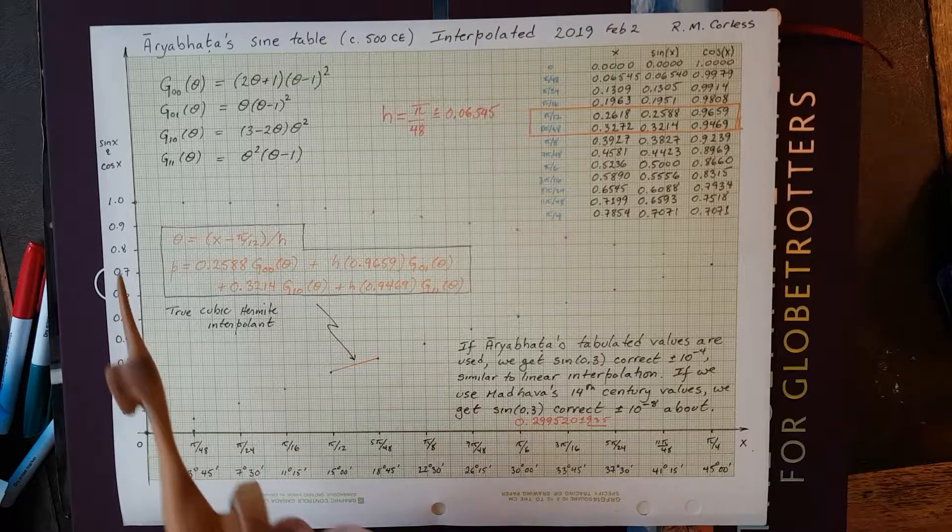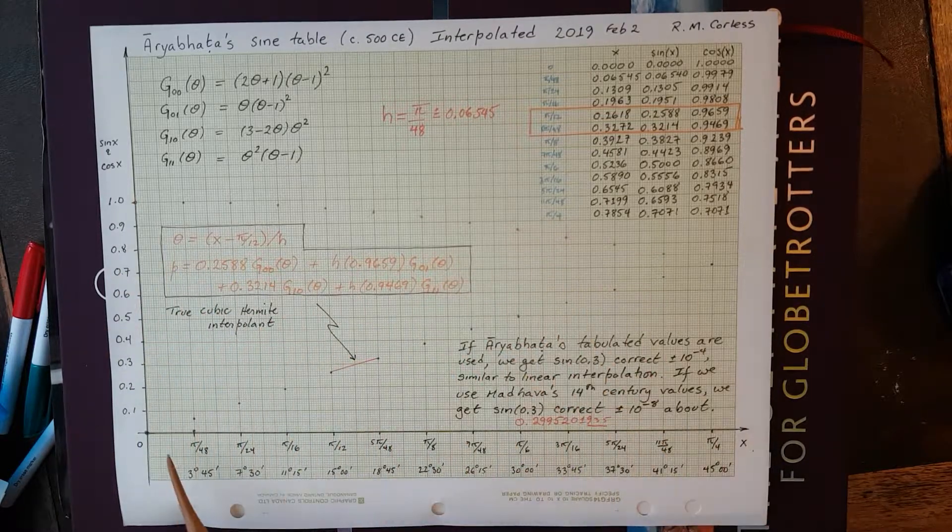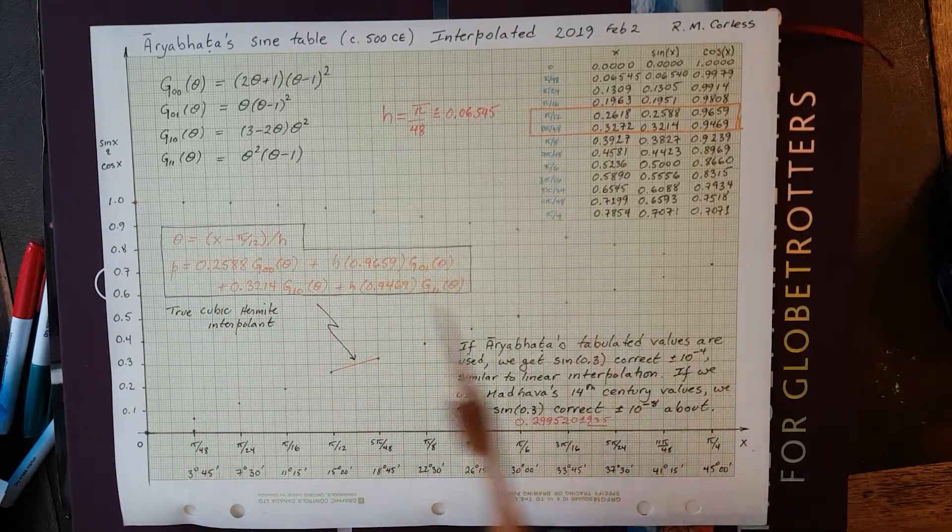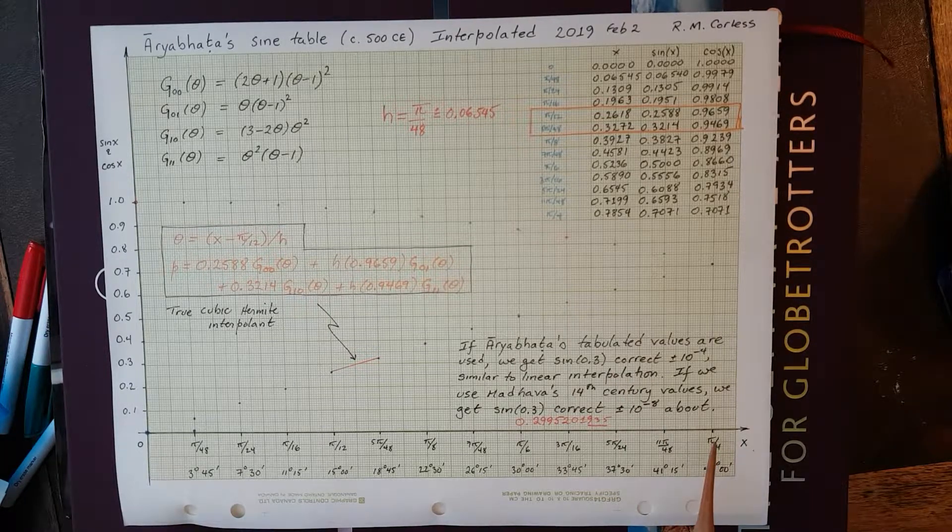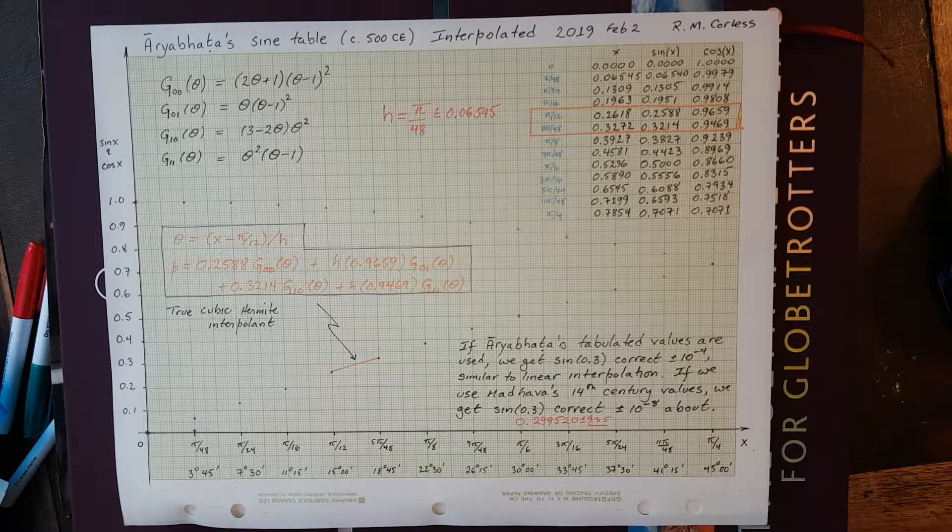Recording the cosine of these sine values is equivalent to recording the sine values. The angles go from 0 up to π over 4, and his table went all the way up to π over 2.